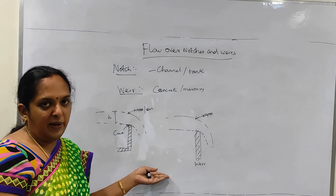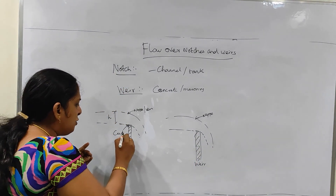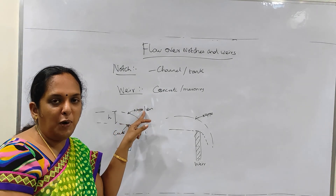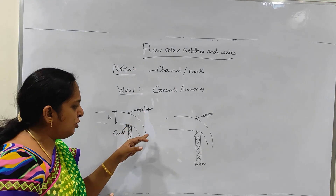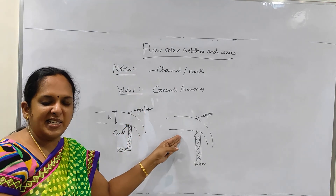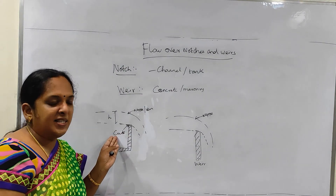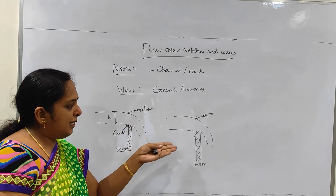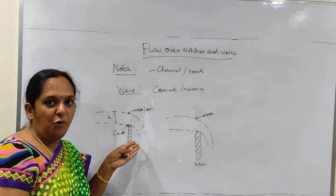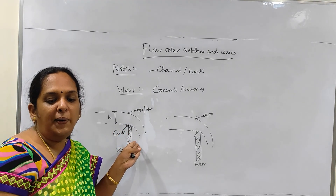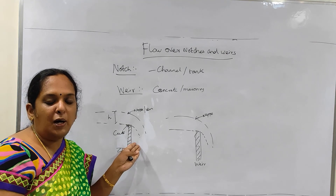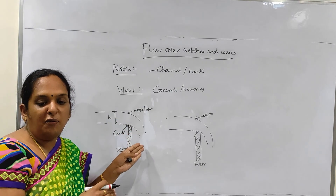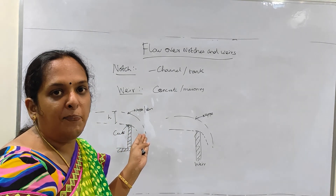So the bottom edge of the notch or the top of the weir over which the water flows — that is said to be the crest. So nappe or vein is a sheet of water flowing over the notch or the weir. In both cases it is said to be nappe. The crest is at the bottom edge of the notch or at the top of the weir — the part over which the water flows. That is known as the sill or crest.